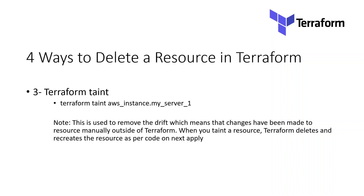For example, if I have created an AWS instance of type T2 micro initially through my Terraform code, and later on someone went into the console or through AWS CLI and changed it to let's say M5 large — what you could do is come back to your Terraform, taint that resource, and then on the next apply Terraform will delete that resource from the destination and recreate it as per your code. Now let's see that in action.